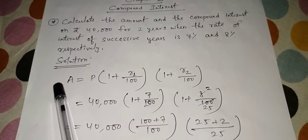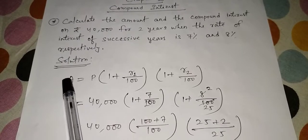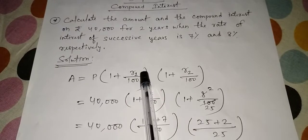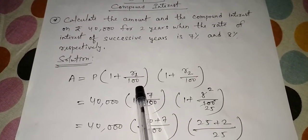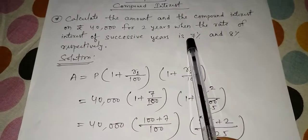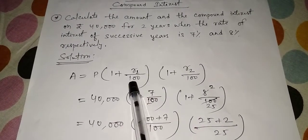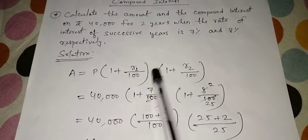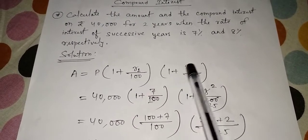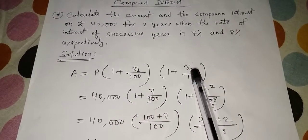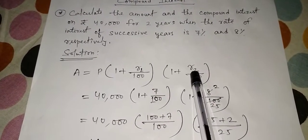As you all know this formula is the old formula but there is little bit change in the formula. So what is the change? You just see: A = P(1 + r1/100). So this r1 is a new thing for you because there are two rates. So for the first rate r1/100, again one more bracket you have to open, same thing you write but here 1 + r2/100.